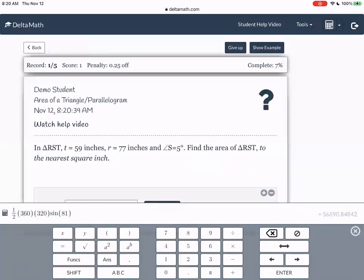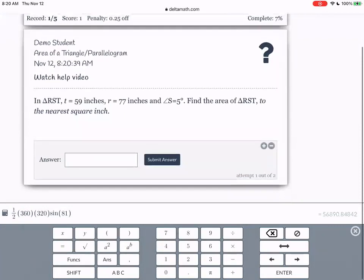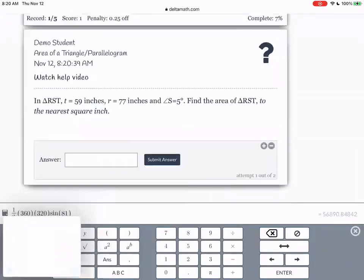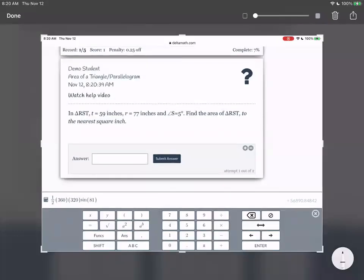Let me just do one more with you guys or one more or two more depending on what you guys want. Okay. In triangle RST, T is 59 inches, R is 77, and angle S is 5 degrees. We're going to find the area of RST to the nearest square inch. Let's draw our triangle out.